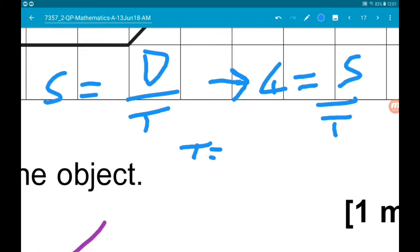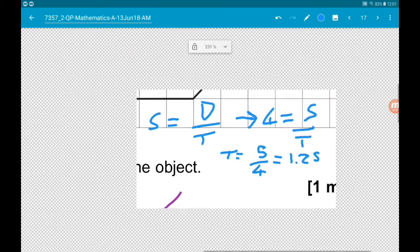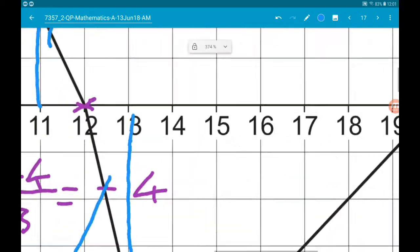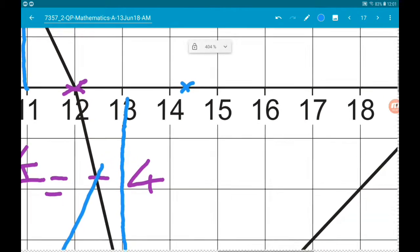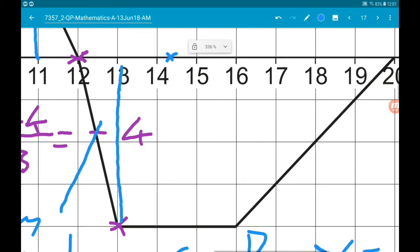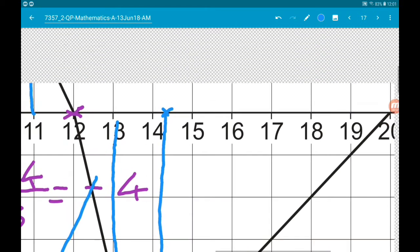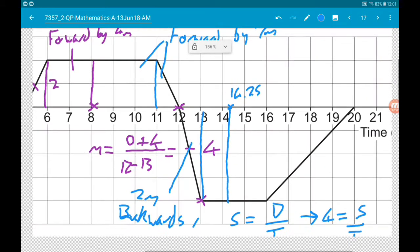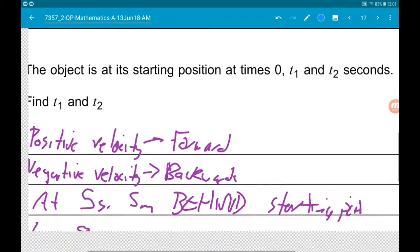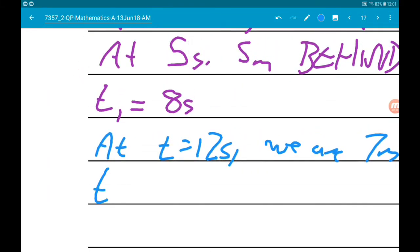So 1.25 seconds after 13, we are at the starting point. So this is 14.25. So t2 is 14.25 seconds.